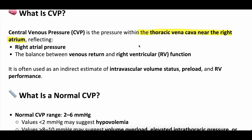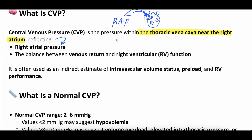CVP, or central venous pressure, is the pressure within the thoracic vena cava near the right atrium. It reflects the right atrial pressure. If there's a central line with the tip sitting right by the right atrium in the superior vena cava, the pressure you transduce from this is going to be a surrogate right atrial pressure — and that's the CVP.